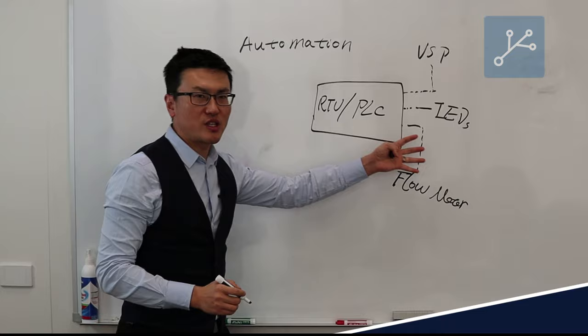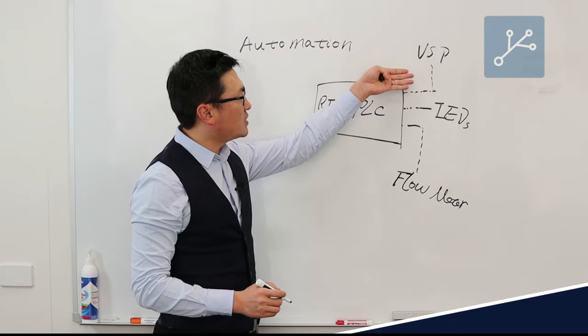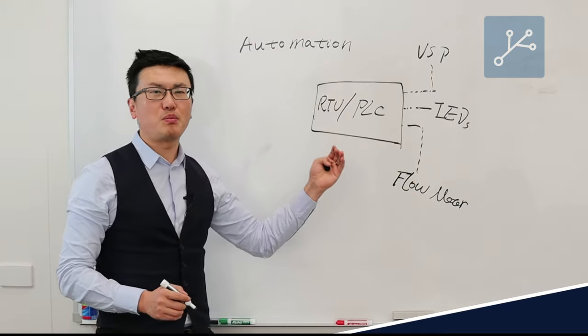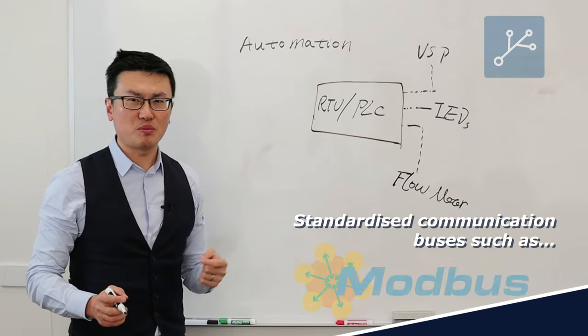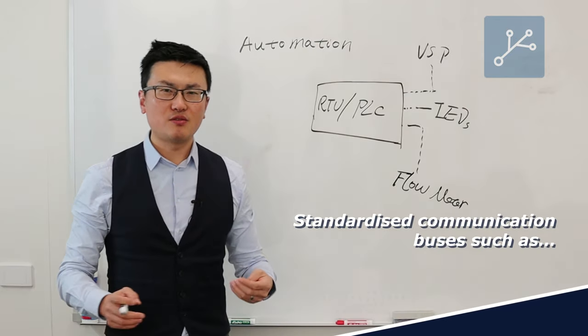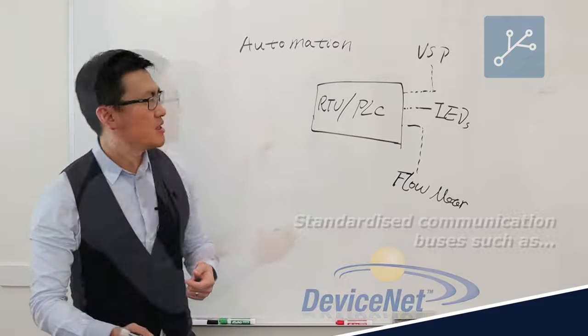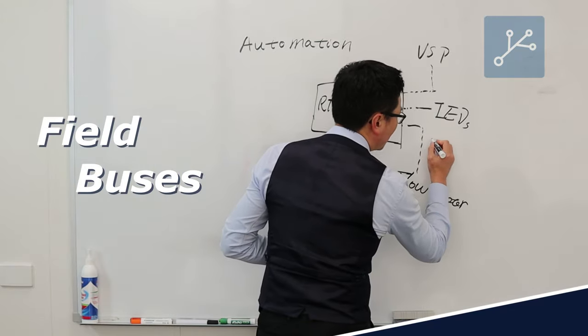This signal exchange between the PLC, RTU and other IEDs can be done through buses. For example, Modbus, Profibus, DeviceNet, Ethernet IP. And we call these field buses.